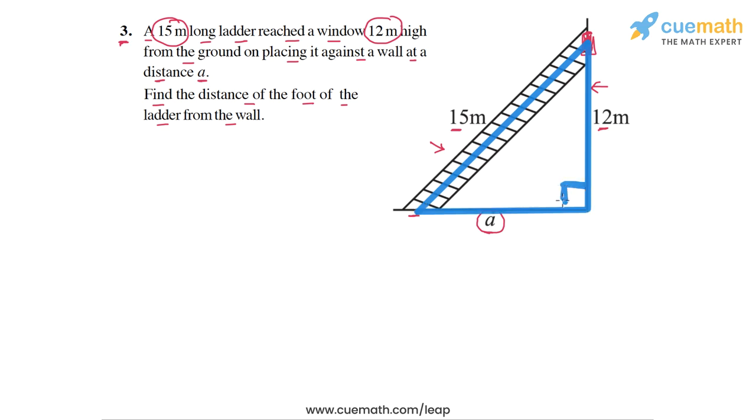And this angle here is 90 degrees. So all we need to do is to apply the Pythagoras theorem to this right triangle. And that will give us the value of this unknown side whose length is a.